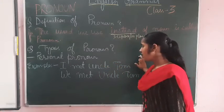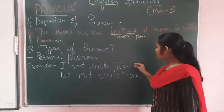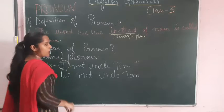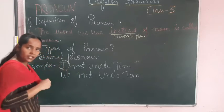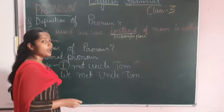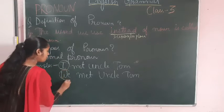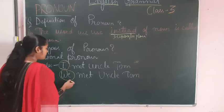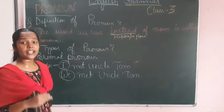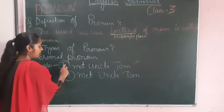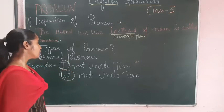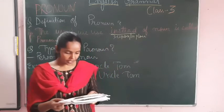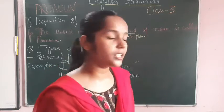The first example is: 'I met uncle Tom.' Here 'I' is a pronoun referring to only one person — just me. So it is a first-person singular personal pronoun. The second example is: 'We met uncle Tom.' Here 'we' refers to more than one person. So 'I' is the first-person singular pronoun and 'we' is the first-person plural pronoun.